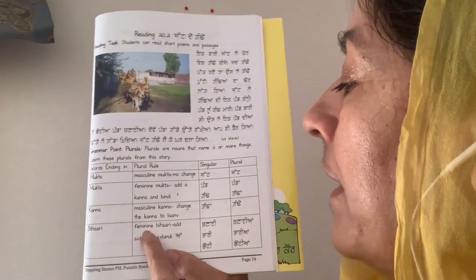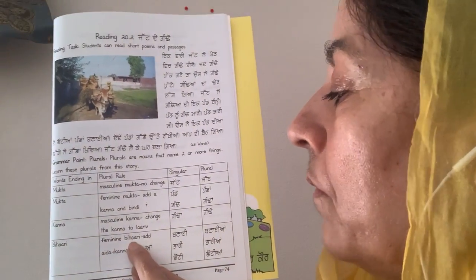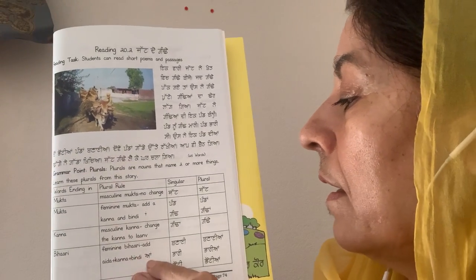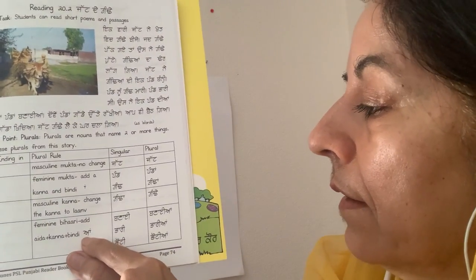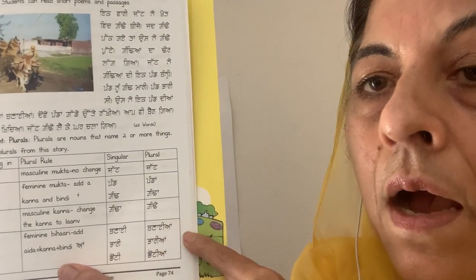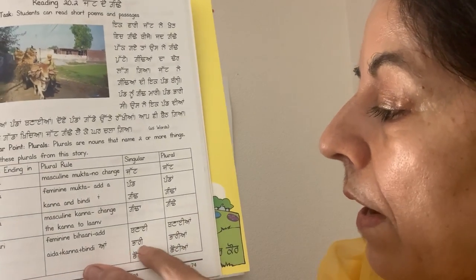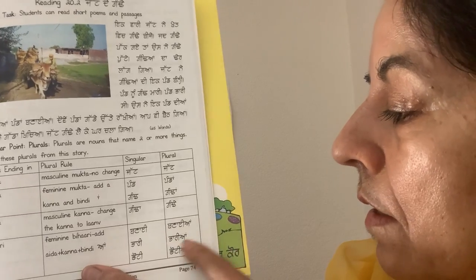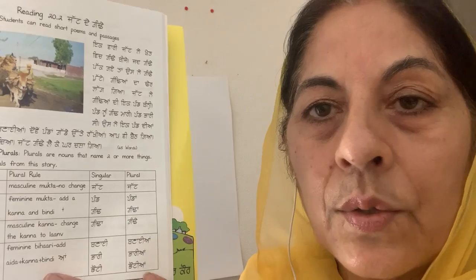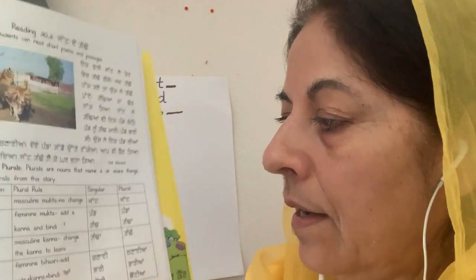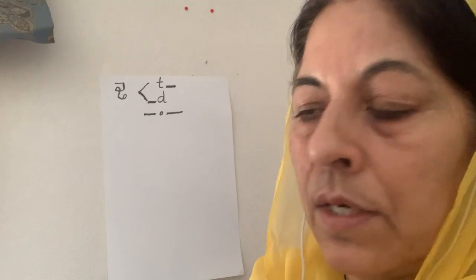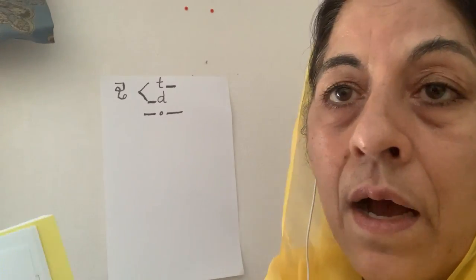When a feminine noun ends in a bihaari, you add kanna and bindi. Banai, banai yaan. Paari, paari yaan. Choti, choti yaan. Kudi, kudi yaan. Mithi, mithi yaan. Kodi, kodi yaan. That's how you do it.